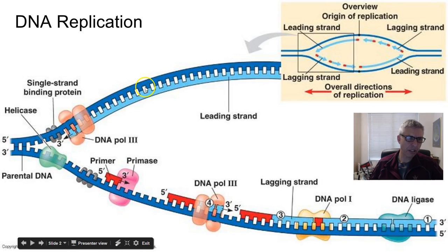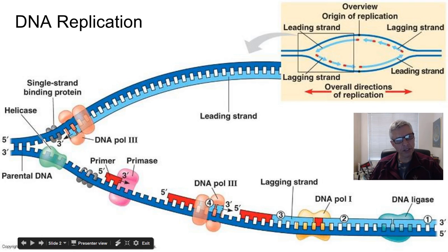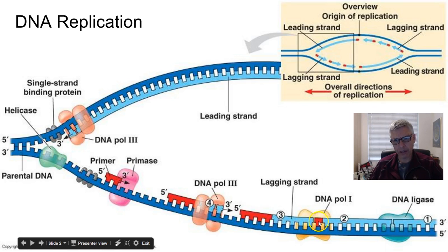Do you see the problem when we look at the lagging strand? Look closely — this is the five prime and three prime end; remember they run in opposite directions. So when DNA polymerase comes in and tries to do the same thing, it doesn't recognize it. It has to journey all the way in next to the helicase, connect on, and then go three to five in this direction. But the helicase behind it is continually unzipping the DNA, which creates gaps — new exposed nucleotides on the parental DNA. That's why you have these gaps here.